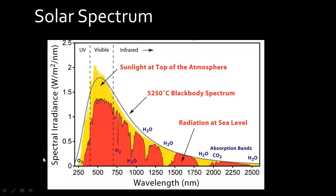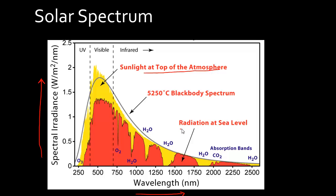What I'm plotting here is spectral irradiance, which shows the power contained in the spectrum as a function of the wavelength of the light. What I'm plotting in yellow represents the spectrum at the top of the atmosphere, and what I'm plotting in red represents the spectrum reaching the surface of the earth at sea level. These two spectra differ from each other.